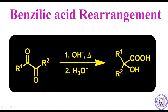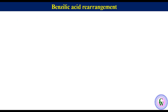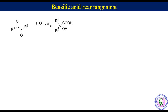Hello friends, today we are going to discuss benzylic acid rearrangement. It is the conversion of 1,2-diketone into alpha hydroxy carboxylic acid. For this transformation, 1,2-diketone is first treated with alkali hydroxide to get the salt of alpha hydroxy carboxylic acid, which after acidic workup gives alpha hydroxy carboxylic acid.